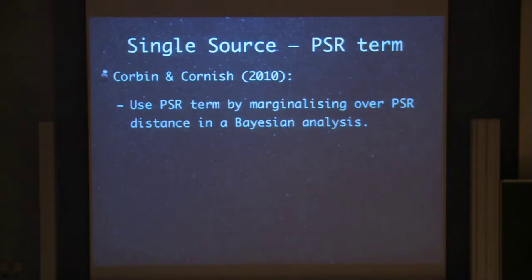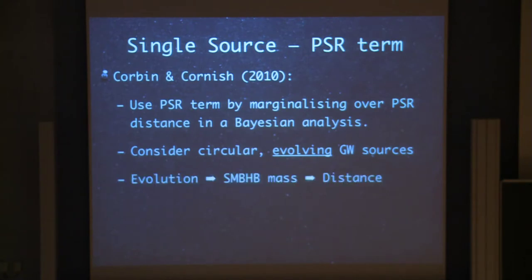There is another thing you can do though, and Corbin and Cornish did that in the same year: you can try and look at the pulsar term as well, and that gives you some more information. However it is difficult to get that term out, because if you don't know the distance to the pulsars well enough, you can't really figure out what this term would be. So what they did was through a Bayesian analysis, they marginalized over the pulsar distance to get both the pulsar distance and a handle on the pulsar term. That of course meant that they also looked at evolving gravitational wave sources, because the time scales are much longer as I said. And once you have evolution, you can derive a supermassive black hole binary mass from that independently, and then you can break that covariance and hence get the distance independently.